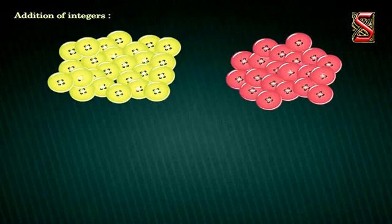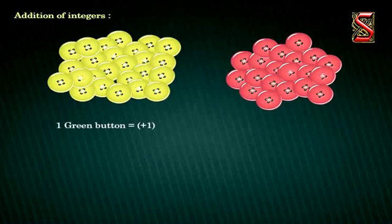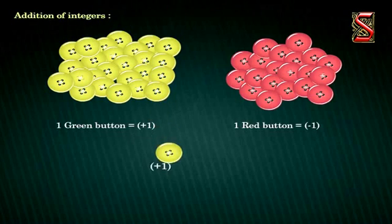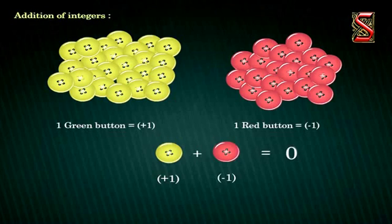To understand this concept of addition of integers, let us do an activity. Take a few green buttons and red buttons. Let one green button denote positive one and one red button denote negative one. We can see that a pair of one green button positive one and one red button negative one will denote zero. That is one plus negative one is equal to zero.